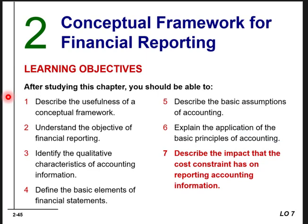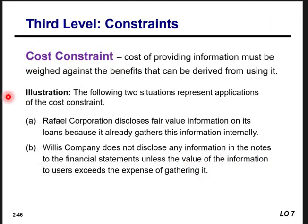Learning objective seven: describe the impact of the cost constraint on reporting accounting information. The cost of providing information must be weighed against the benefit derived from using it. For example, Rafael Corporation discloses fair value information on its loans because it already gathers this information internally — no extra cost. Willis Company does not disclose information in notes unless the value to users exceeds the expense of gathering it. You don't want to spend extra money providing information that is not useful.